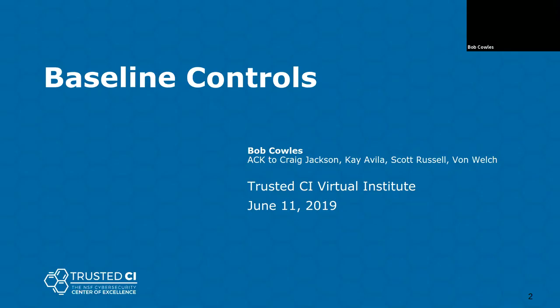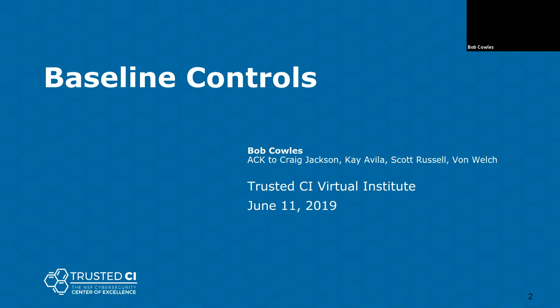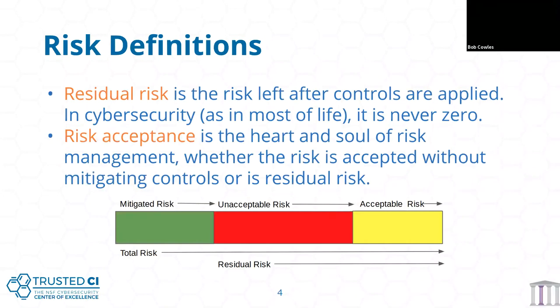So what is a control? Security controls are the safeguards or countermeasures we use to detect or counteract security risks, and those risks can apply to physical property, information, computer systems, or other assets — definition from Wikipedia, of course, the source of knowledge here.